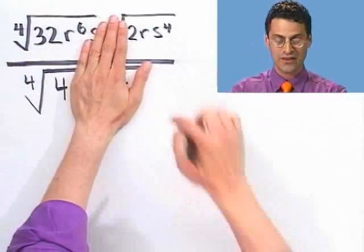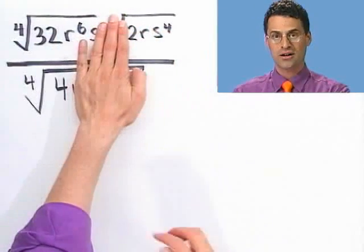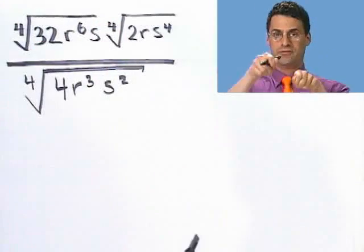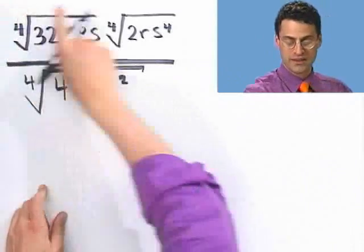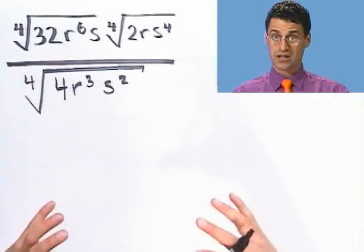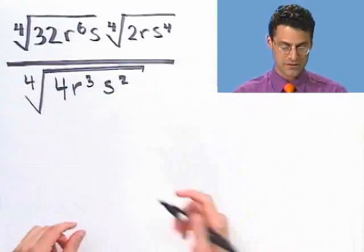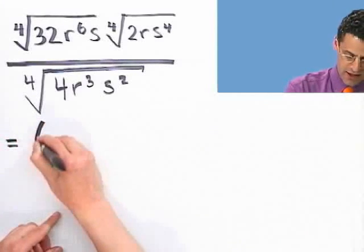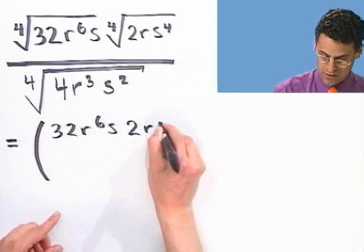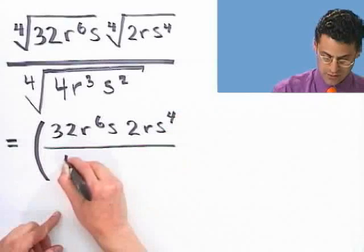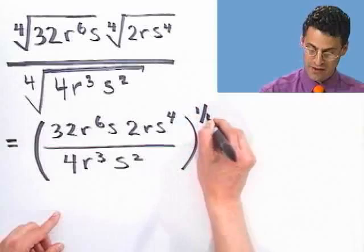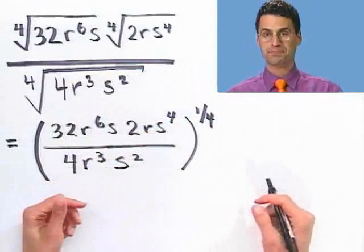I can get rid of all the separate fourth root signs and put a line there — a fourth power on top and a fourth power on the bottom is just one huge fourth power over everything. So this becomes the fraction 32r⁶s times 2rs⁴ all divided by 4r³s², all raised to the one-fourth power.